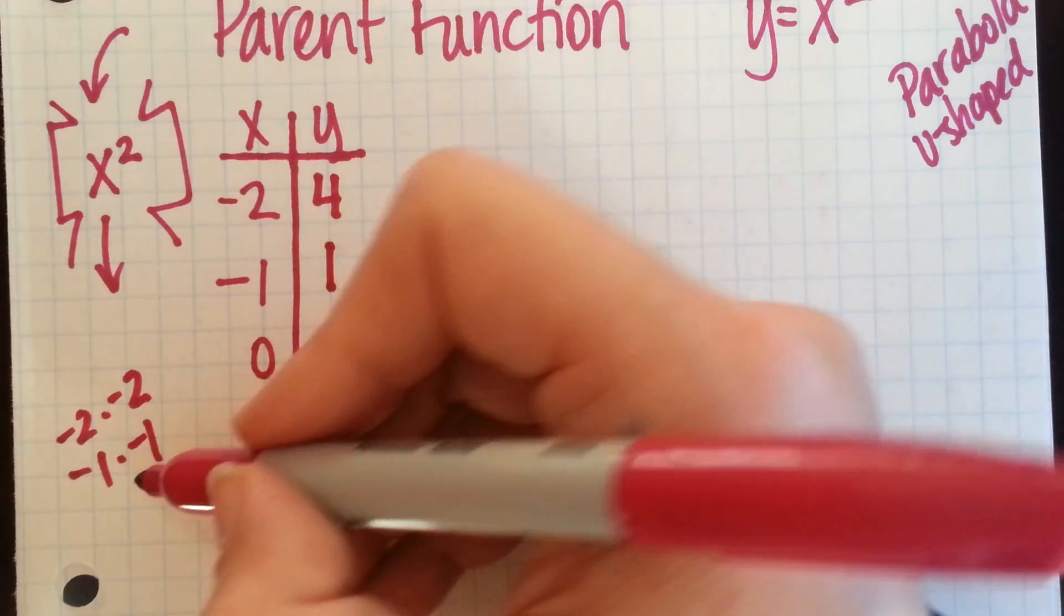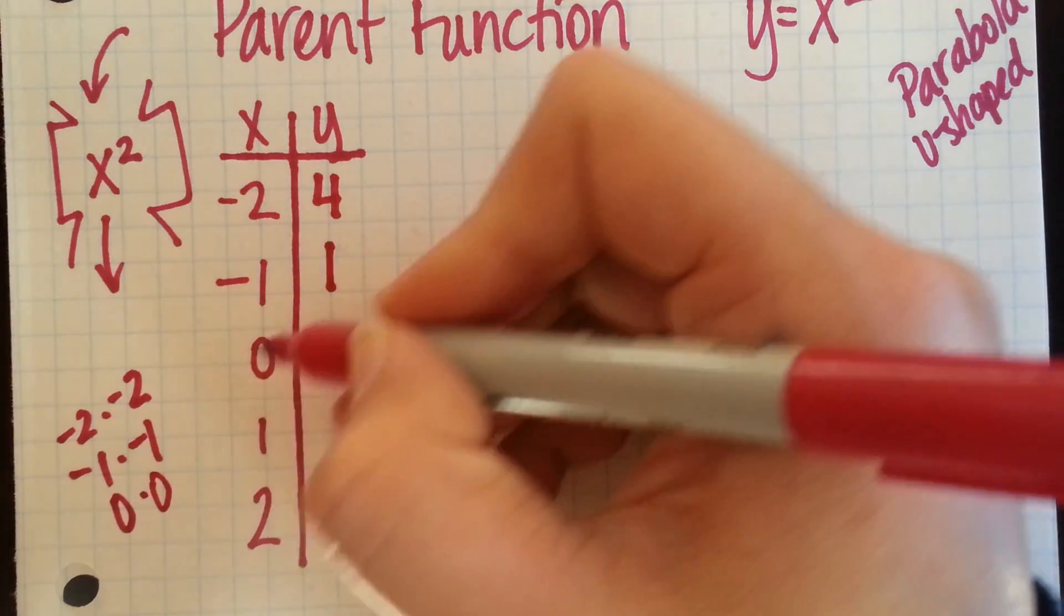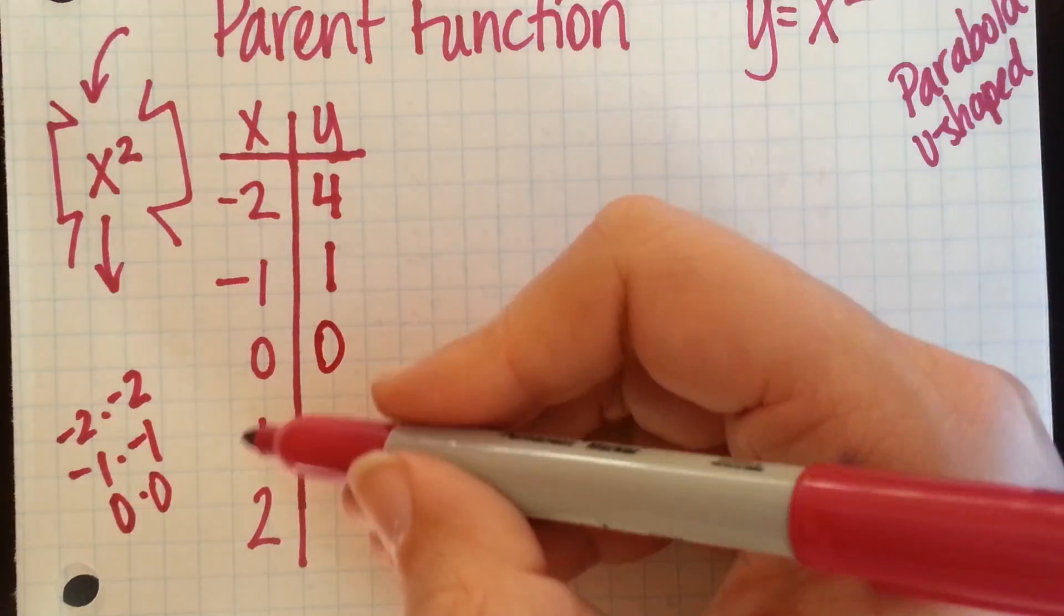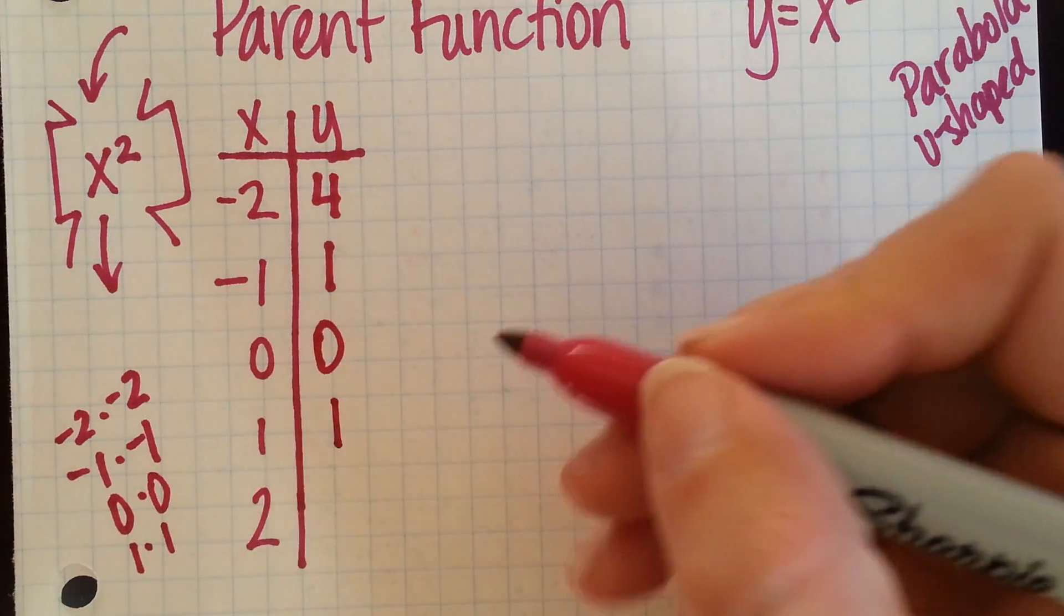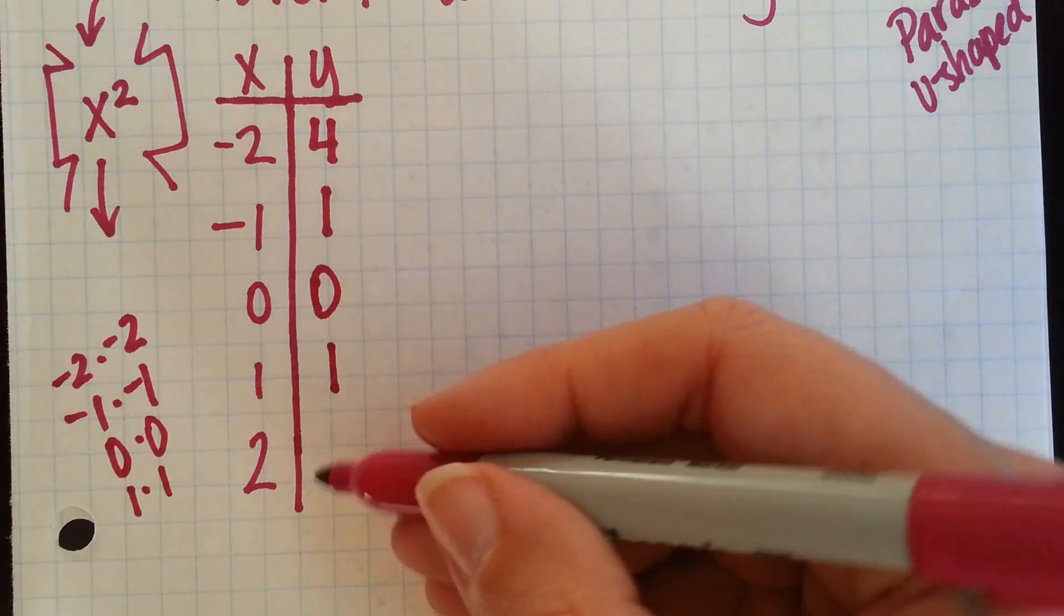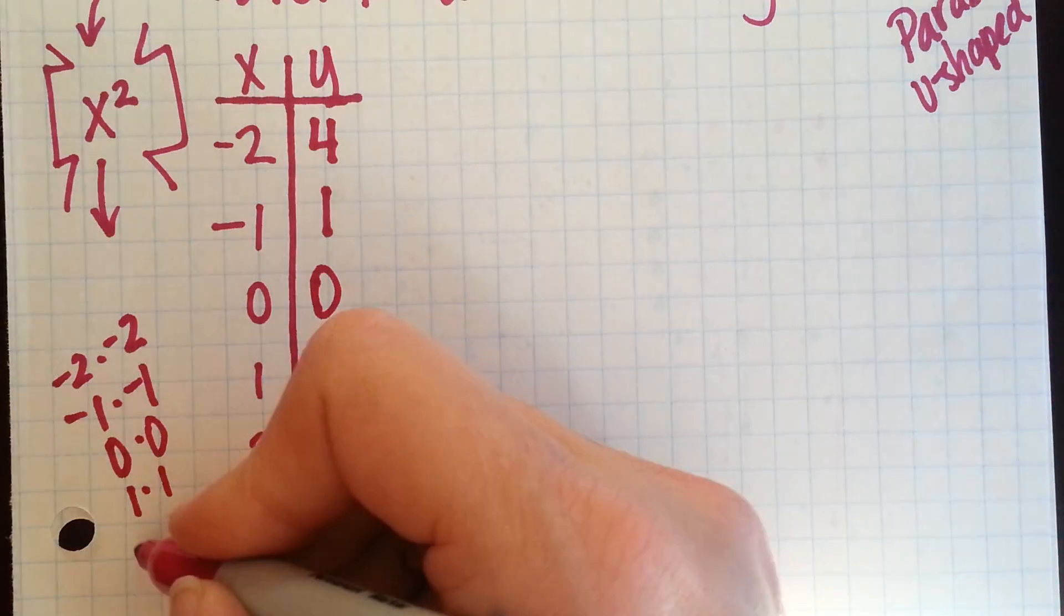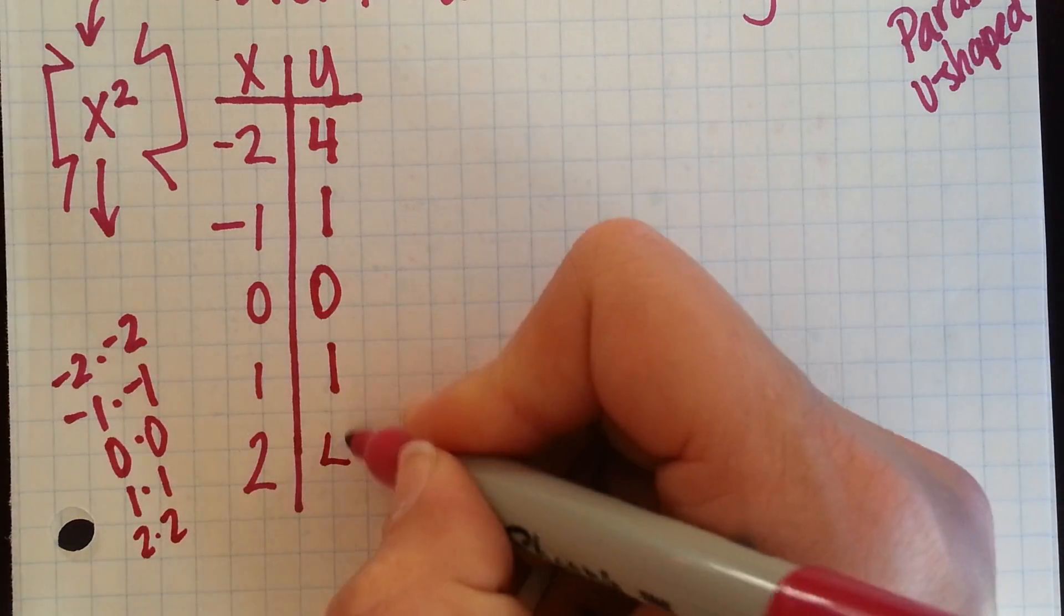If I throw in a 0, 0 times 0 would be 0. If I throw in a 1, that would be 1 times 1, which is 1. And if I throw in a 2, a 2 squared would be 2 times 2, which is 4.